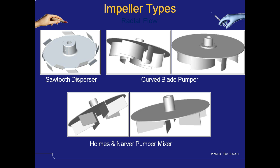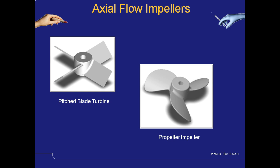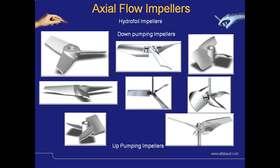Here we see other examples of radial type impellers, with blades angled or curved to achieve different mixing effects. Here are two typical examples of axial flow impellers: the pitch blade turbine and the propeller impeller, which are very common in many applications. Here we can also see examples of hydrofoil impellers — again axial flow impellers, but with blades angled or curved and used for either down or up pumping as required.